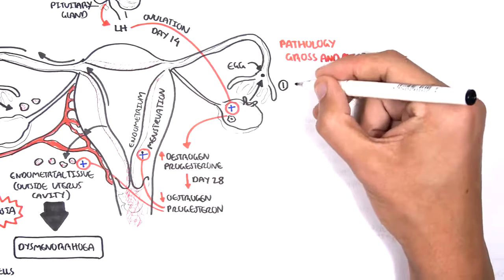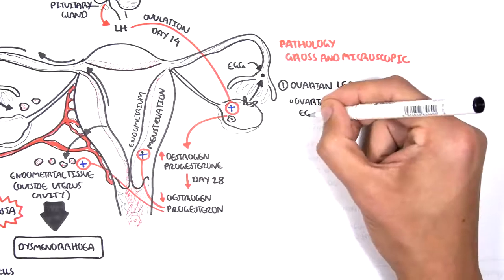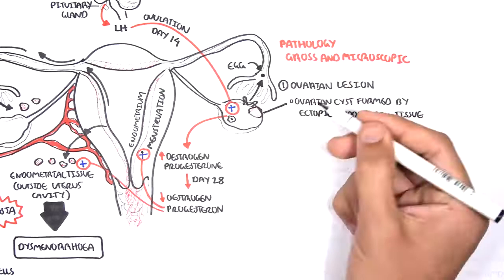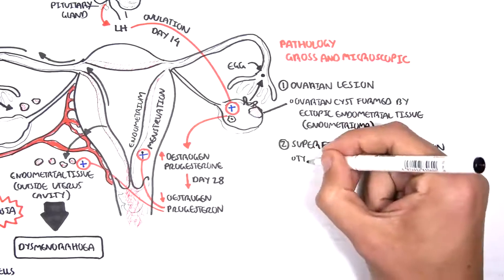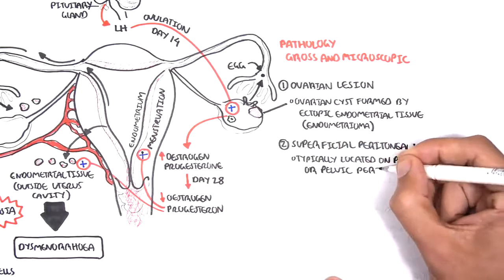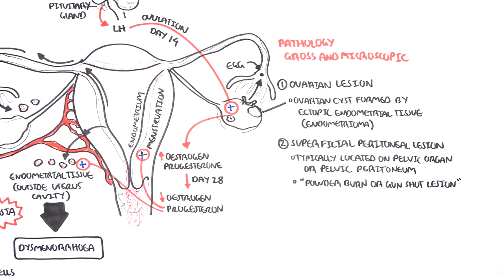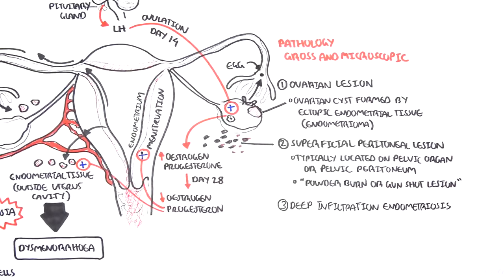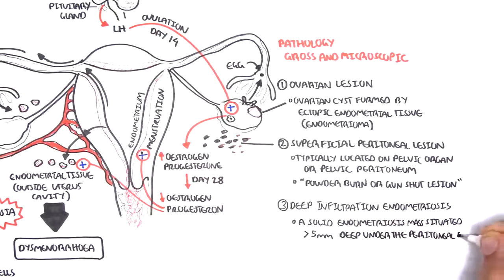The first pathological form is endometriosis within the ovary — an ovarian lesion where an ovarian cyst is formed by ectopic endometrial tissue, known as an endometrioma. The second is the superficial peritoneal lesion, typically located on pelvic organs or peritoneum, with a characteristic powder burn or gunshot lesion appearance. The third is deep infiltrative endometriosis — a solid endometriosis mass situated greater than 5 millimeters deep under the peritoneal surface, which more likely than not requires surgical intervention.